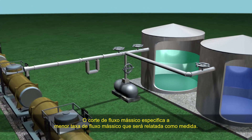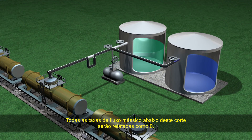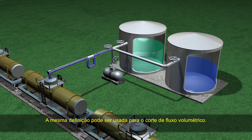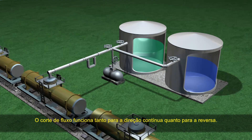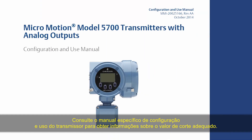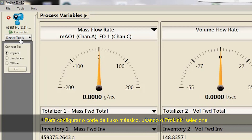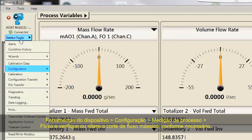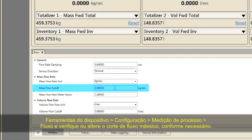Mass Flow Cutoff specifies the lowest mass flow rate that will be reported as measured. All mass flow rates below this cutoff will be reported as zero. The same definition can be used for volume flow cutoff. Flow cutoff works in both the forward and reverse direction. The mass flow cutoff should never be set to zero. Refer to your specific transmitter configuration and use manual for the proper cutoff value. For configuring mass flow cutoff using ProLink, select Device Tools, Configuration, Process Measurement, Flow, and verify or change the mass flow cutoff as necessary.